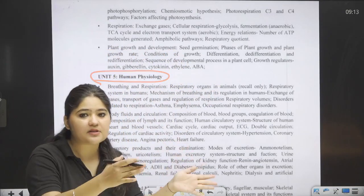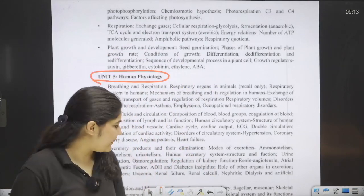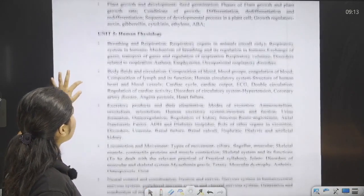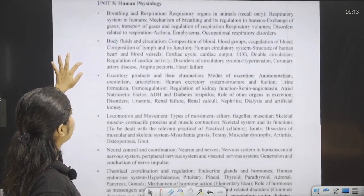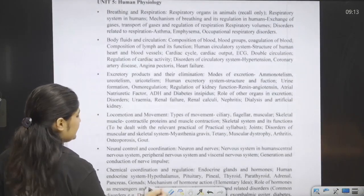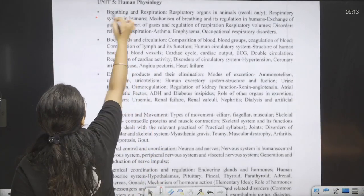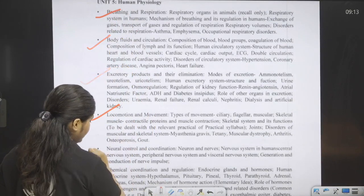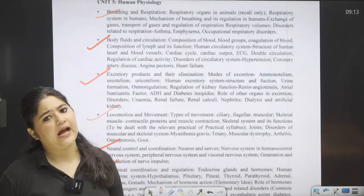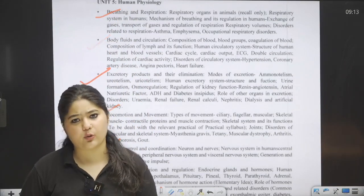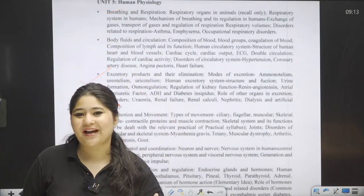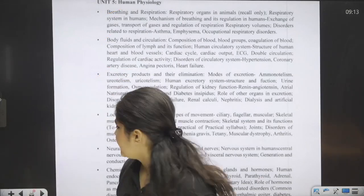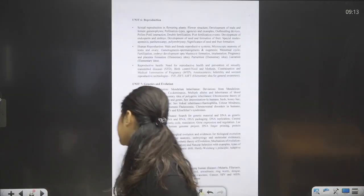For Human Physiology, out of the earlier seven chapters, Digestion has been removed. The remaining six chapters will all come: Breathing, Body Fluids and Circulation, Excretion, Locomotion, Neural Control and Coordination, and Chemical Control and Coordination. That covers Class 11.